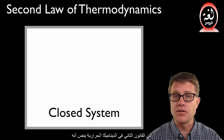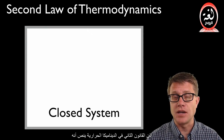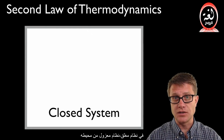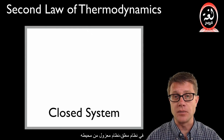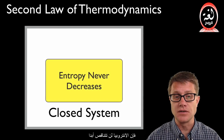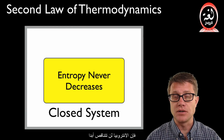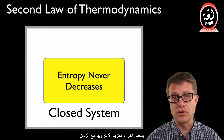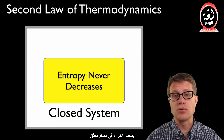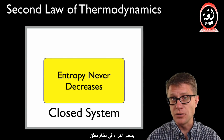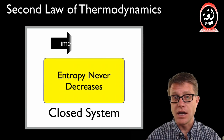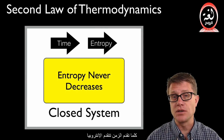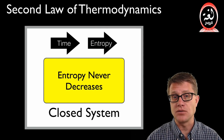The second law of thermodynamics says that in a closed system — a system isolated from its surroundings — entropy will never decrease. In other words, entropy is going to increase over time. In a closed system, as time advances, entropy is going to advance as well.